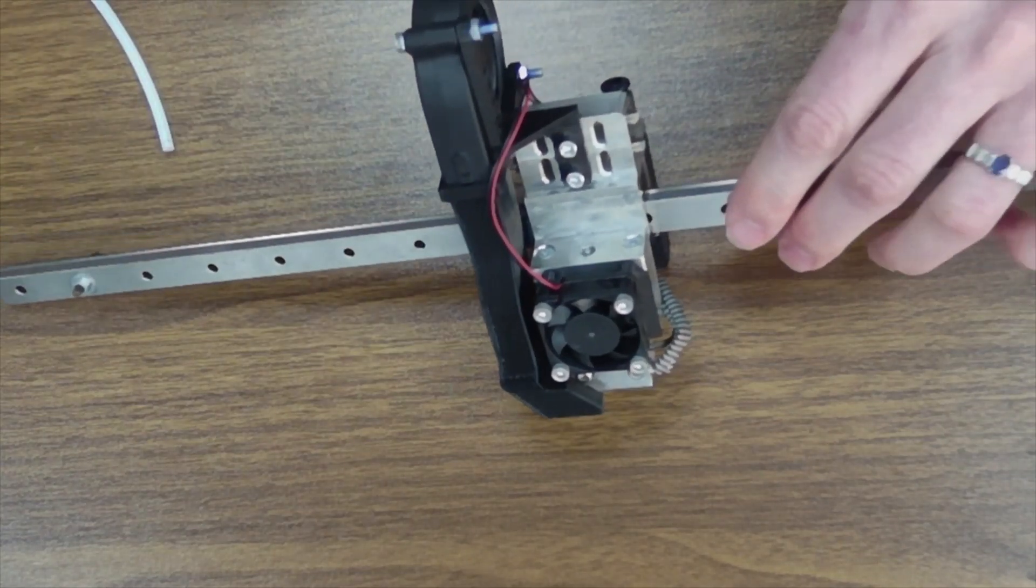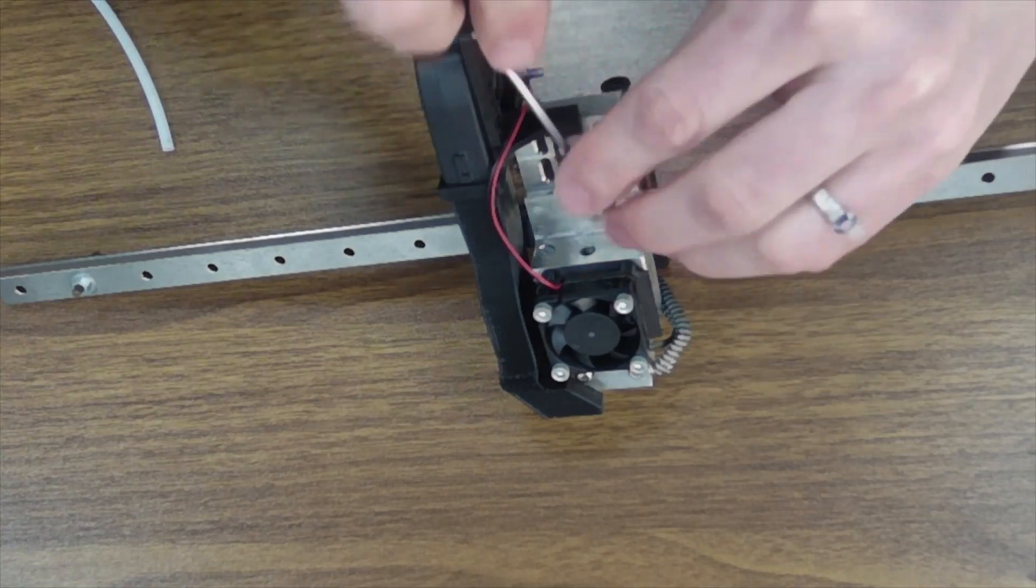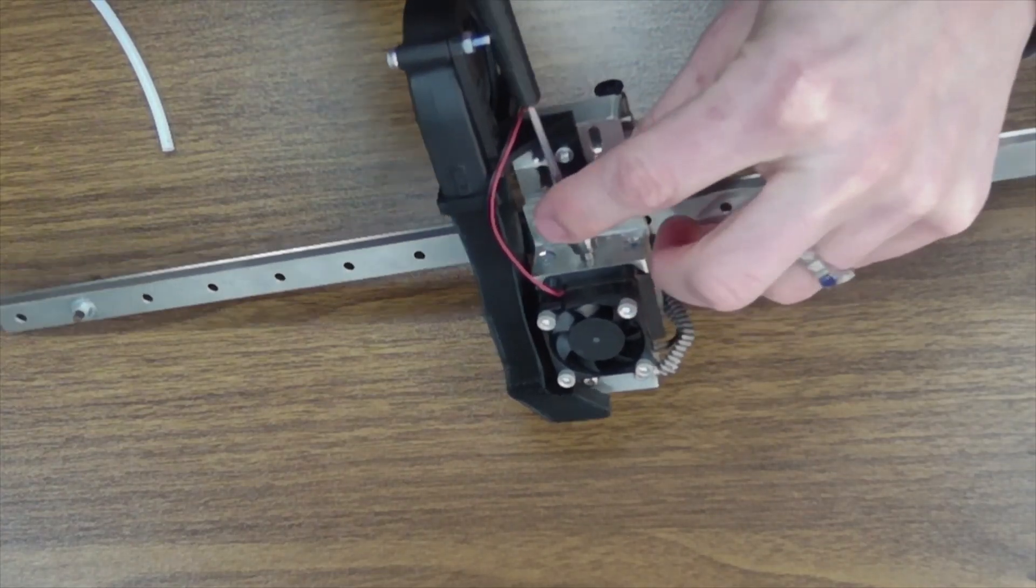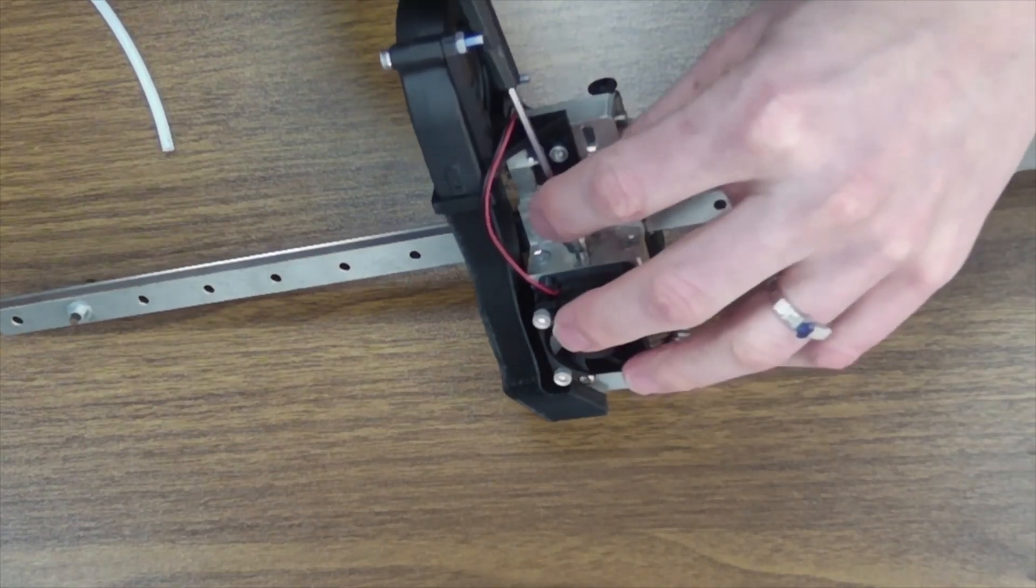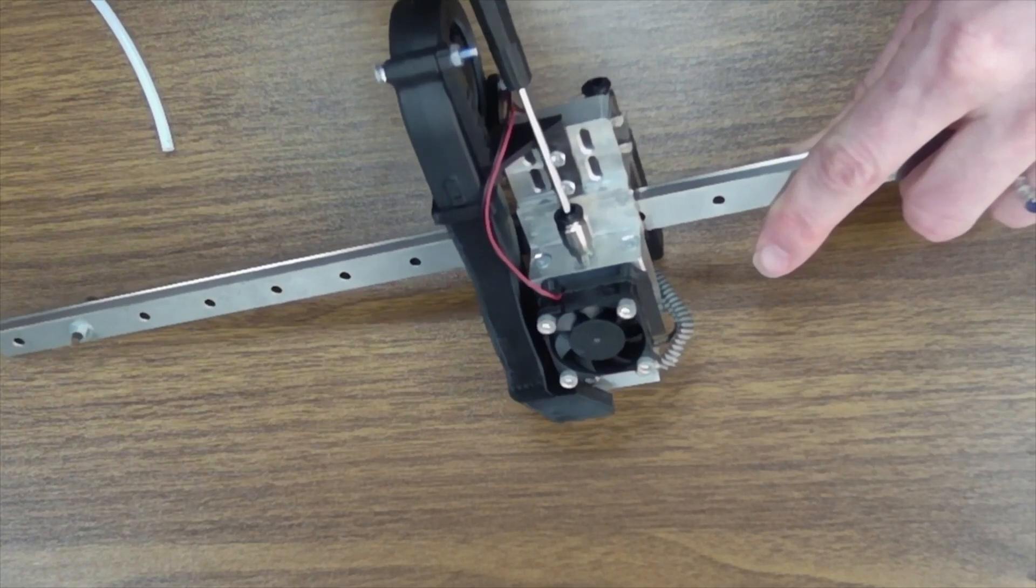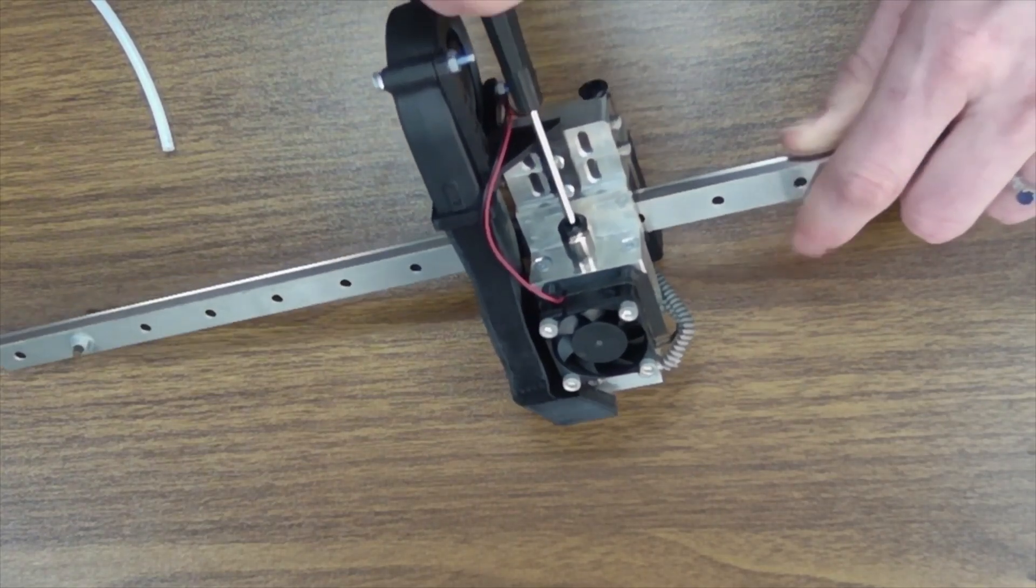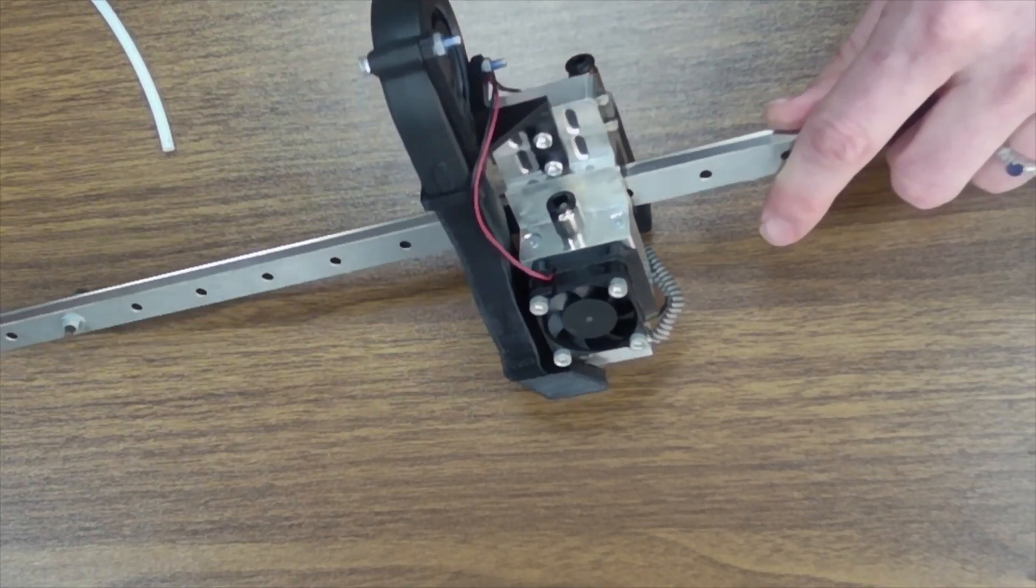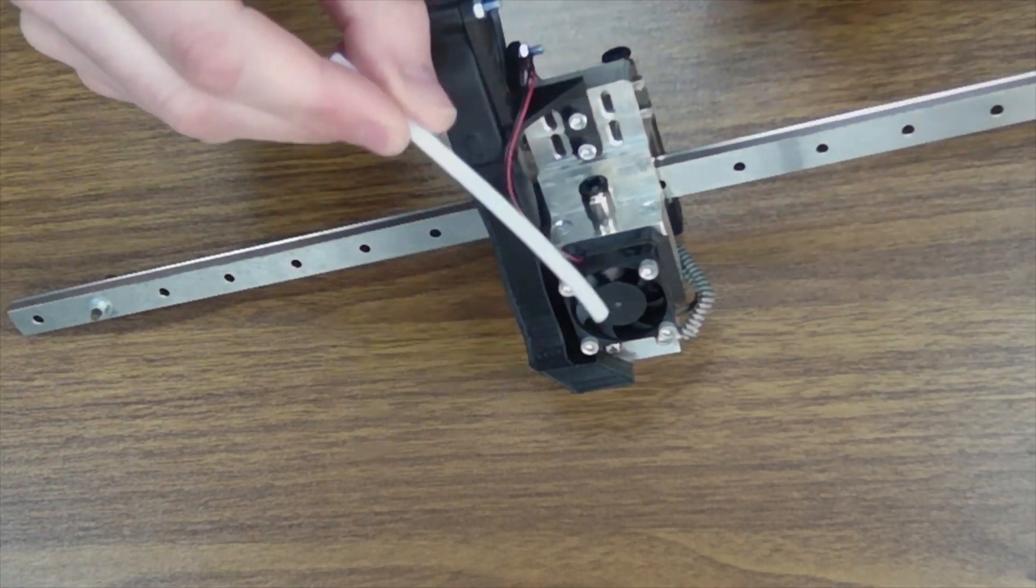Your last step is you reinstall your PDC fitting. You just thread that in until it bottoms out. Then your last step is going to be reinstalling your Bowden tube.